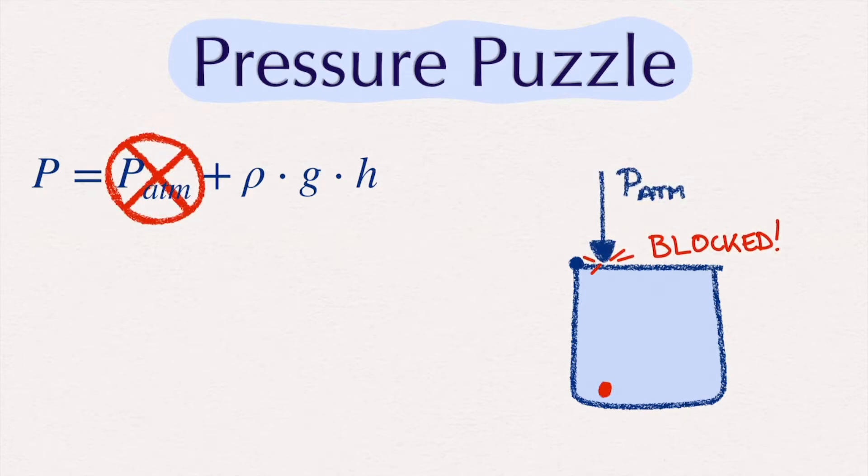The first thing to note is that the extra pressure coming from the atmosphere can be dropped. Since our fluid is not in contact with the atmosphere, the extra pressure coming from the billions of air molecules crushing down on the fluid is not present.